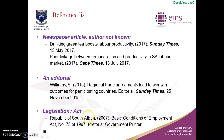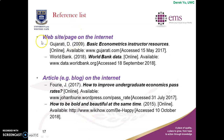What if you use a webpage or website on the internet? Here's an example: Gujarati, 2009 — 'Basic Econometrics Instructor Resources' — then show the word 'online' in square brackets, full stop, 'available,' then the link, then the date you visited this website — for example, 15th of May 2017.